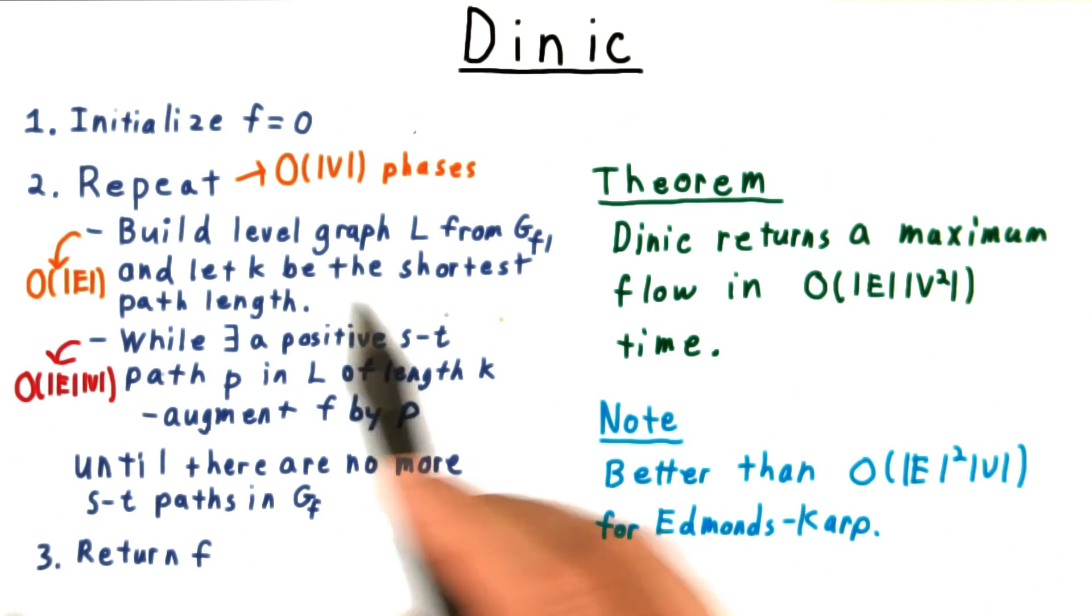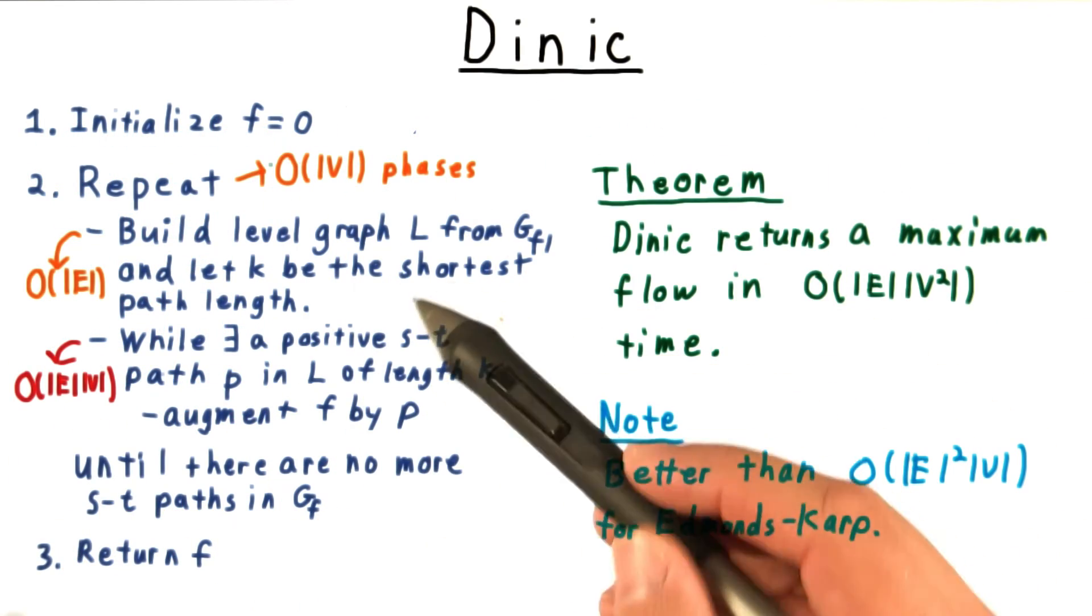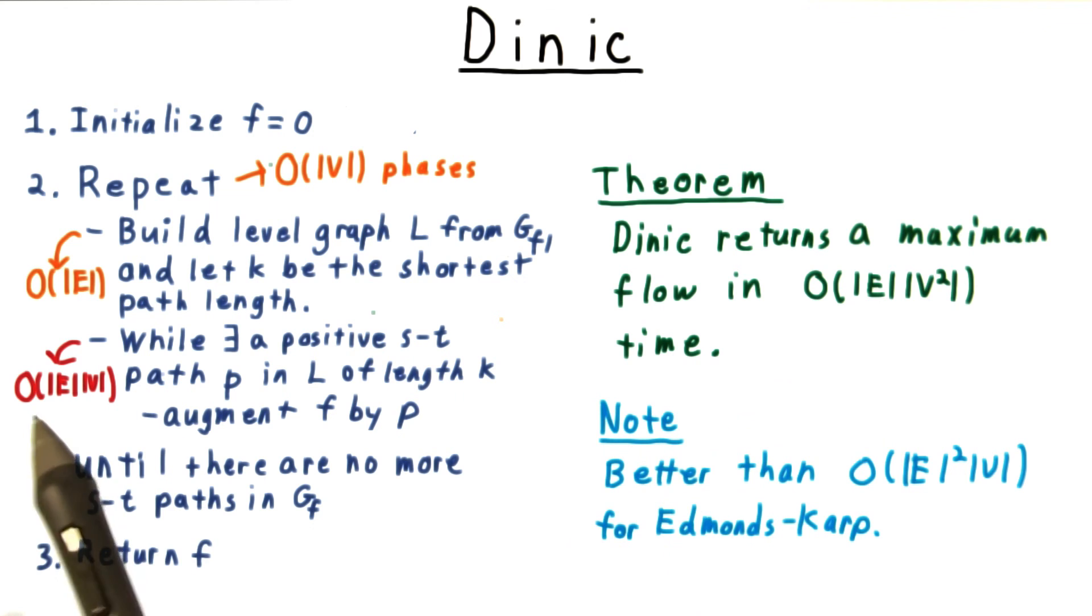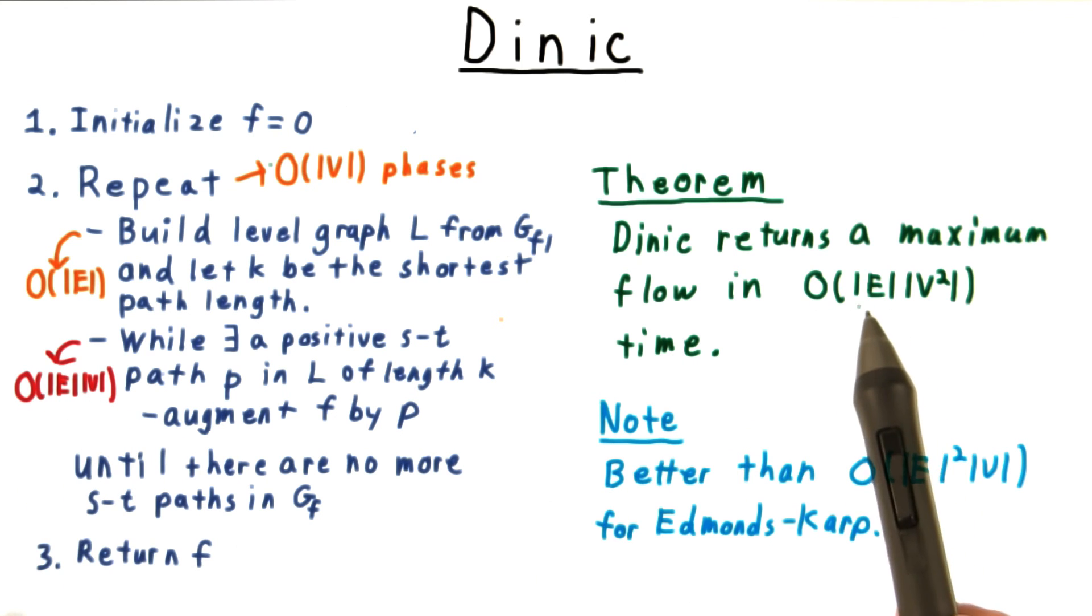Taking this all together then, we have V phases, and each one of the individual phases costs order E times V time for a total of E times V squared time overall, which is an improvement over Edmonds-Karp.